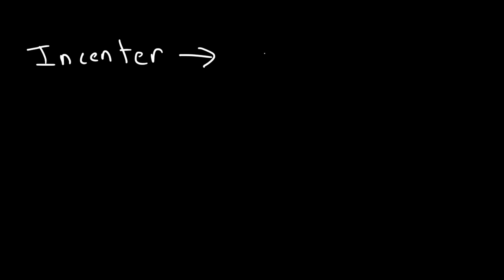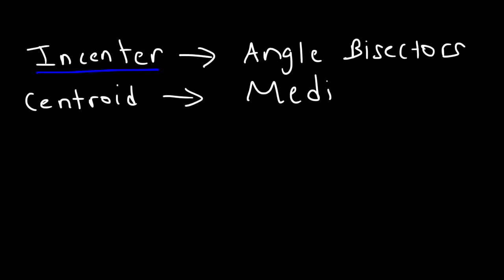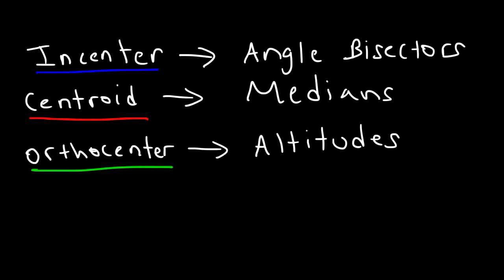So let's review what we've learned. The in-center of a triangle can be found by the intersection of the three angle bisectors. The centroid can be found by the intersection of the three medians. To find the orthocenter, find where the three altitudes meet. And to identify the circumcenter, draw the three perpendicular bisectors.